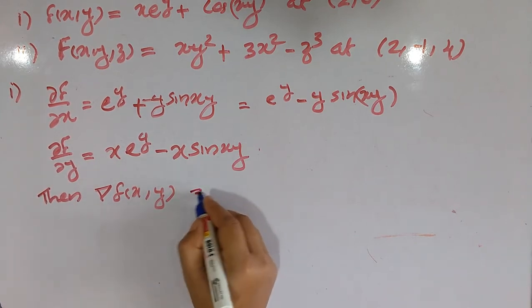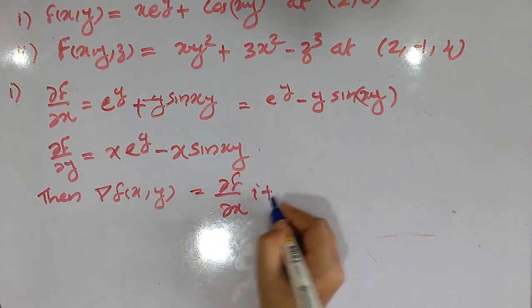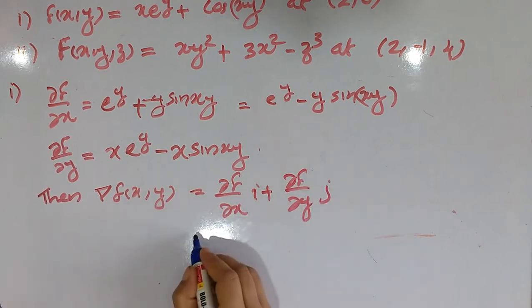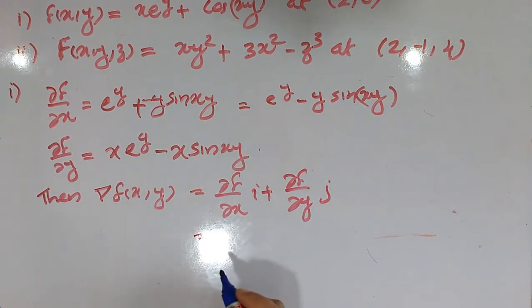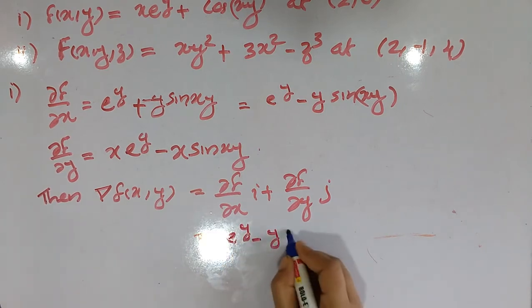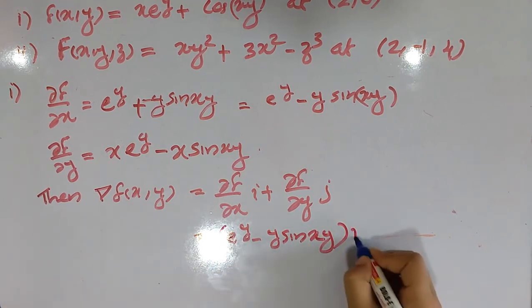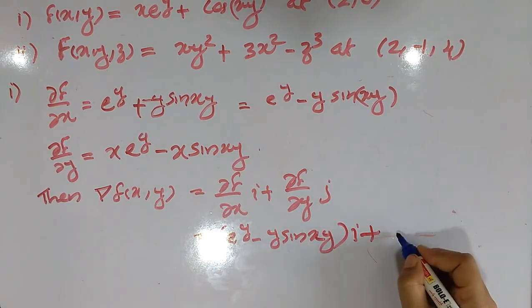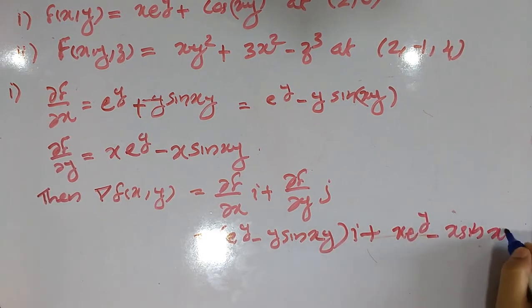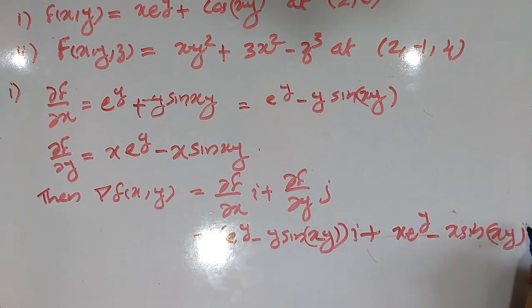The gradient del f(x,y) equals dou f by dou x times i plus dou f by dou y times j. Now substituting: dou f by dou x equals e raised to y minus y sin(xy), so del f(x,y) equals (e raised to y minus y sin xy) i plus (x e raised to y minus x sin xy) j.